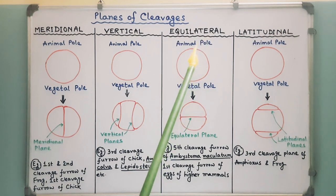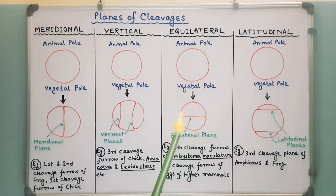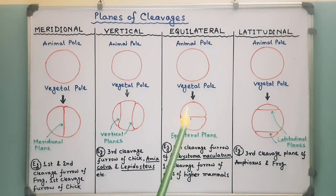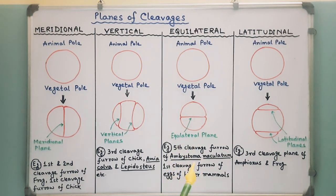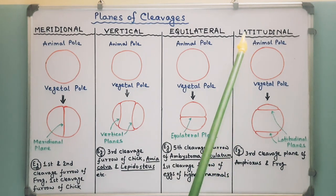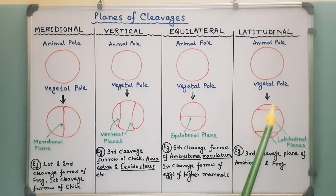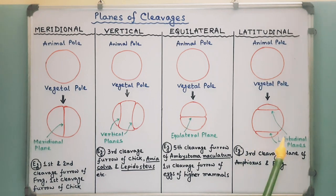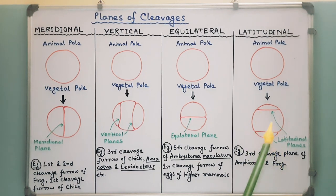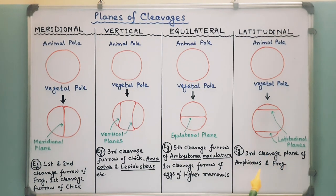Equilateral plane: here the cleavage furrow bisects the egg at right angles to the main axis, halfway between the animal and vegetal poles. For example, the fifth cleavage planes of eggs of Ambystoma maculatum and the first cleavage plane of eggs of higher mammals. Latitudinal plane: here the cleavage furrows course through the cytoplasm on either side of the equilateral plane. It is also called the transverse or horizontal plane. For example, the third cleavage planes of amphioxus and frog.